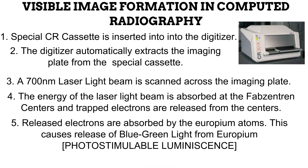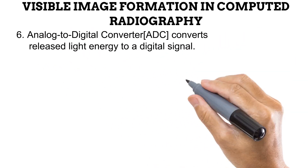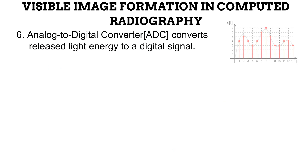The electrons that are released are absorbed by the doped europium. Europium has a special feature: it can undergo a process known as photostimulable luminescence, which is the release of light from a substance when stimulated. As the europium absorbs the electrons getting released from the phabzentrant centers, a blue-green light is given off from europium. The light released by the europium is then converted to a digital signal by a device within the digitizer called a photomultiplier tube or analog to digital converter. This digital signal represents the image that was acquired.